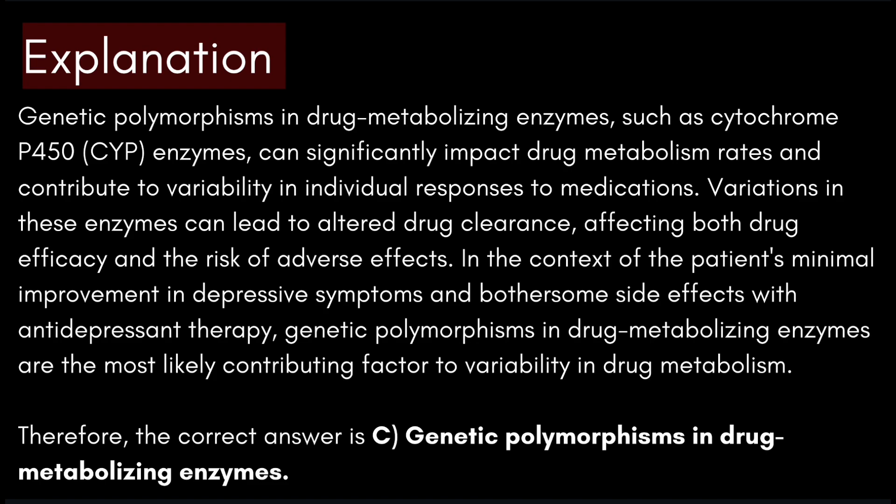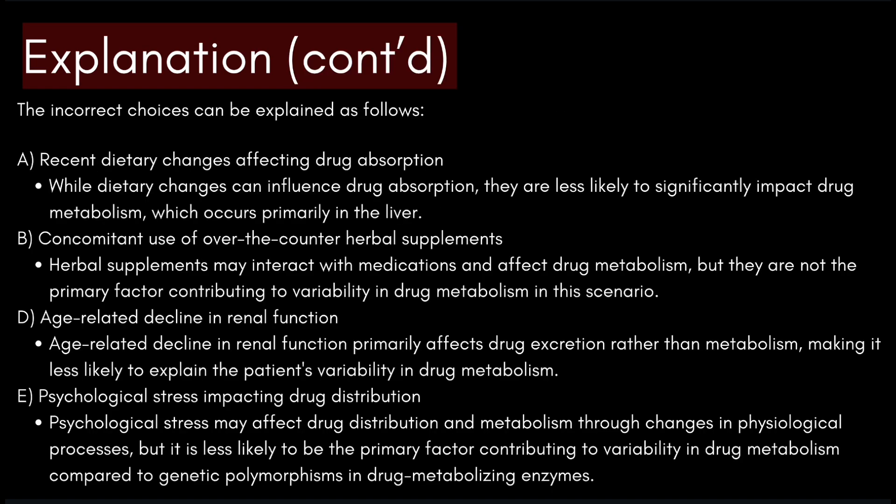Let's see why the incorrect choices are wrong. Recent dietary changes affecting drug absorption: these are less likely to significantly impact drug metabolism, which occurs primarily in the liver — they can influence absorption but not metabolism. Concomitant use of over-the-counter herbal supplements: herbal supplements may interact with medications and affect drug metabolism, but they are not the primary factor in this scenario. Age-related decline in renal function: this primarily affects drug excretion rather than metabolism. Psychological stress impacting drug distribution: stress may affect drug distribution through physiological changes, but is less likely than genetic polymorphisms in drug metabolizing enzymes to be the primary contributing factor.